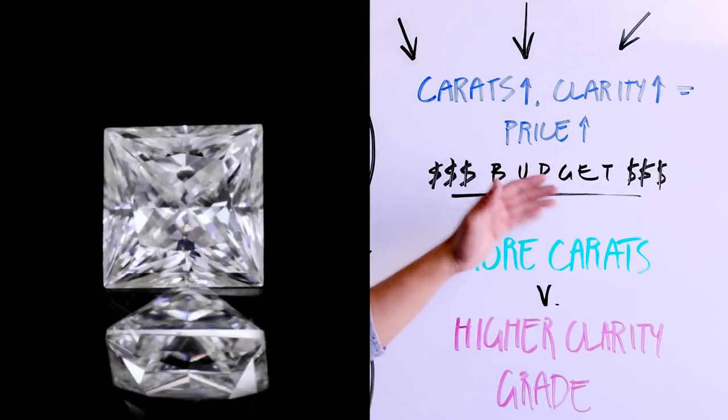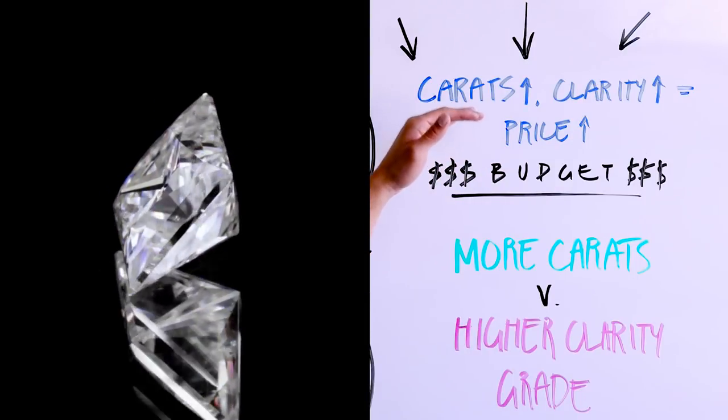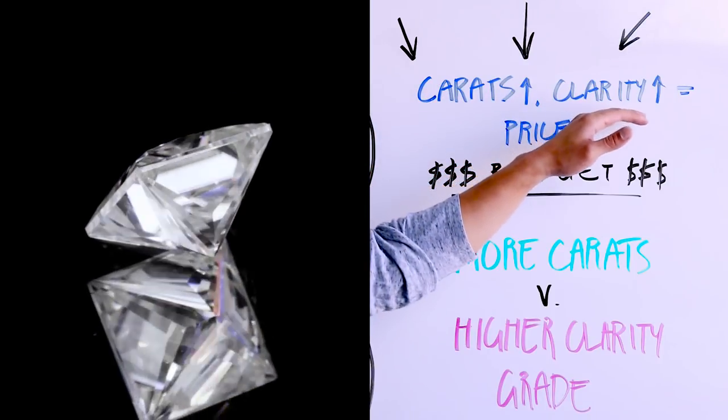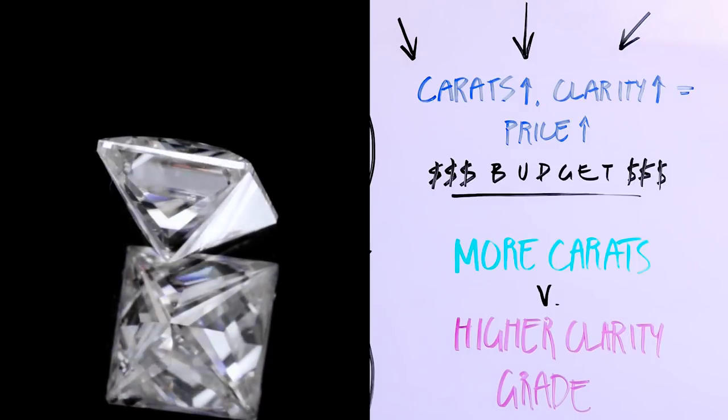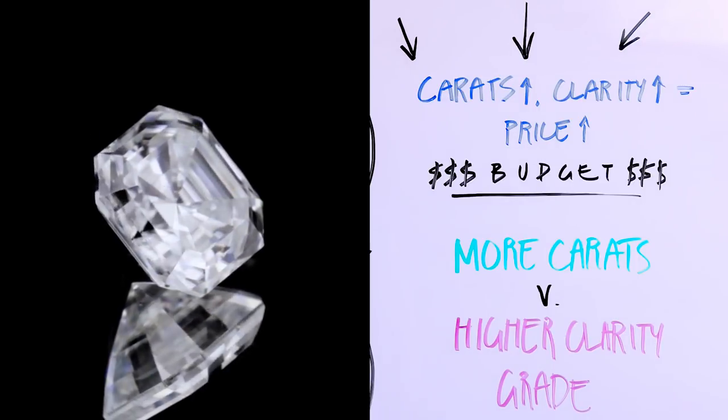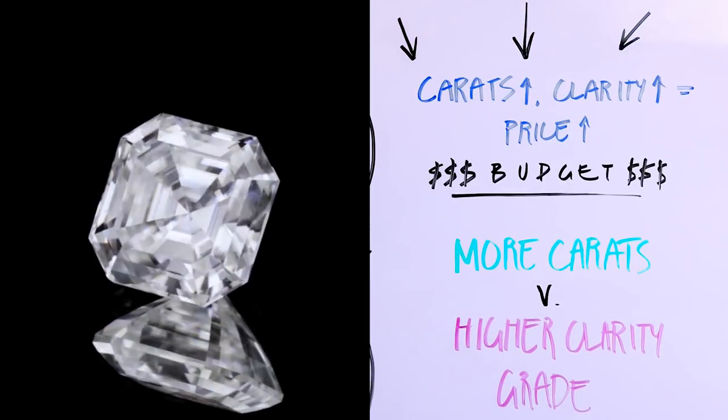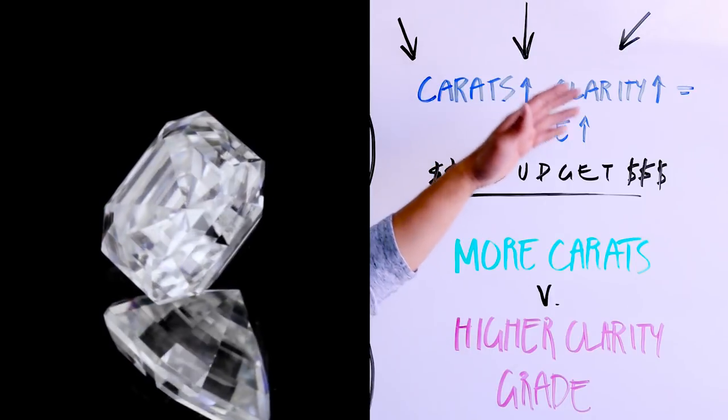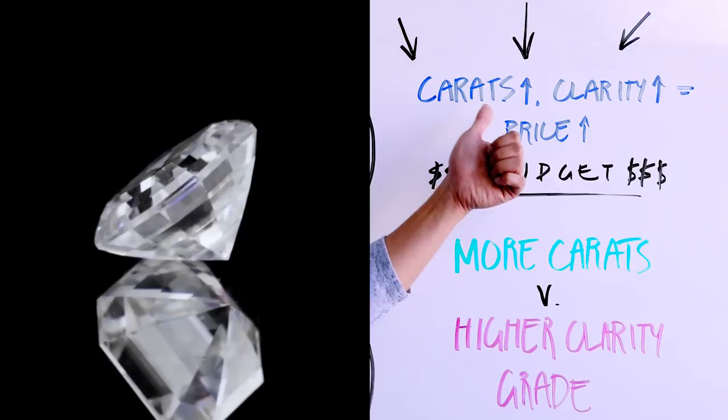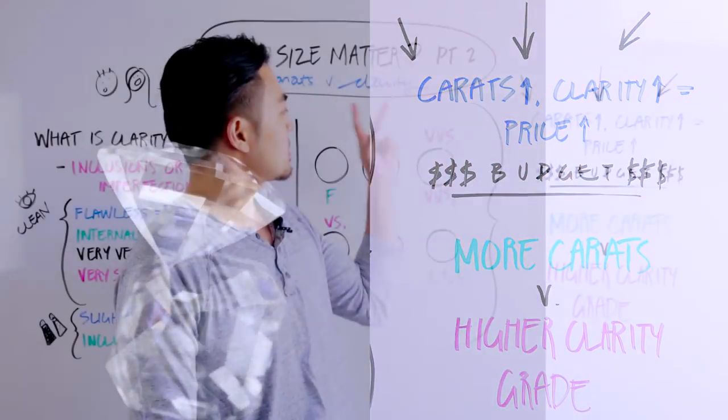In general, the higher the carats or the more weight the heavier a stone is, the pricier a gemstone is. And then the higher the clarity grade, so as it moves up in terms of the clarity grade, from included to slightly included to very slightly included to internally flawless to flawless, the price will move up quite a bit. So the price in general is affected by the higher the weight and the higher the clarity grade, if we're comparing carats versus the clarity.